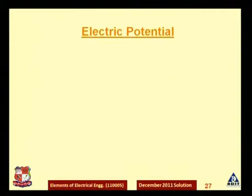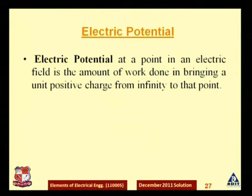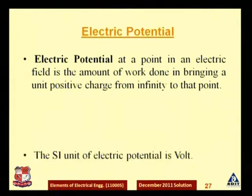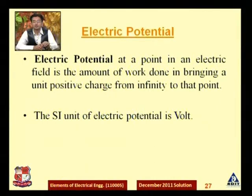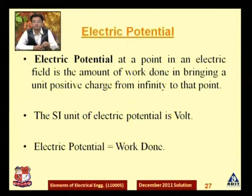Now let us define what is electric potential — that is the second term. Electric potential at a point in an electric field is nothing but the amount of work done in bringing a unit positive charge from infinity to that point. The SI unit of electric potential is voltage.